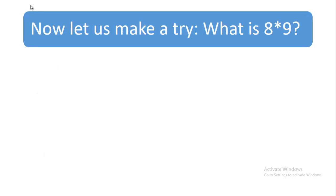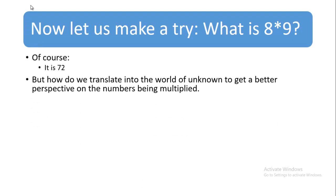Now let us make a try: what is 8 times 9? Of course, it is 72. But how do we translate into the world of unknown to get a better perspective on the numbers being multiplied?